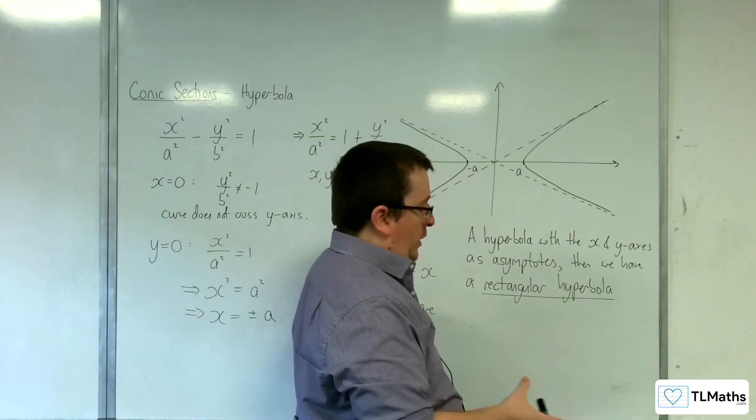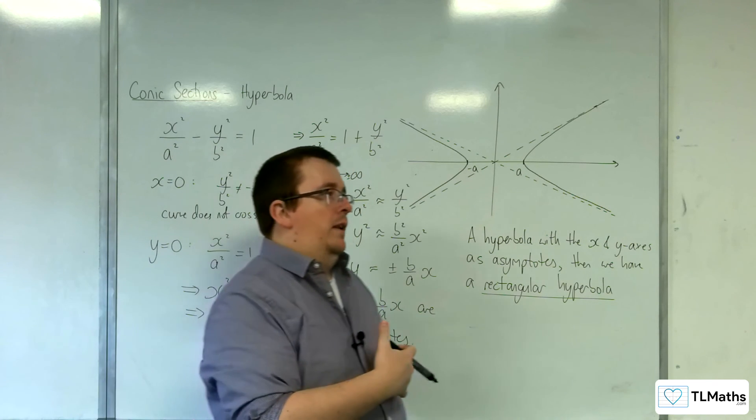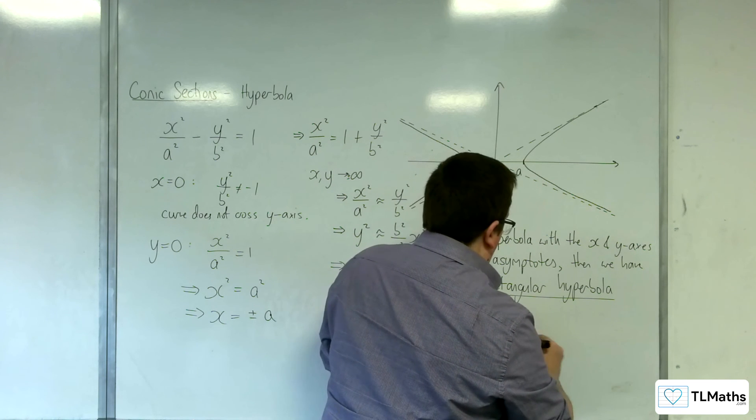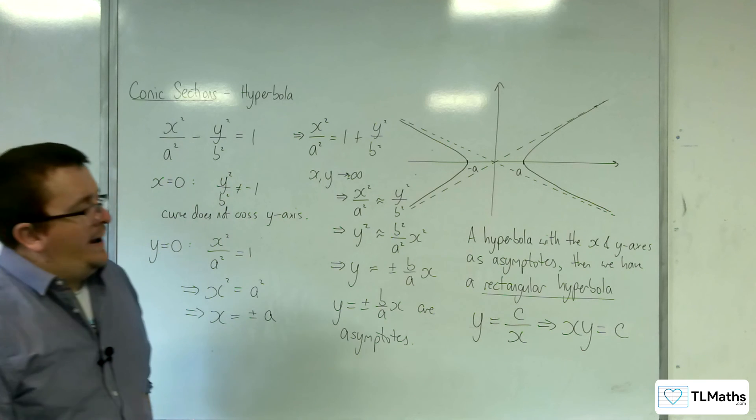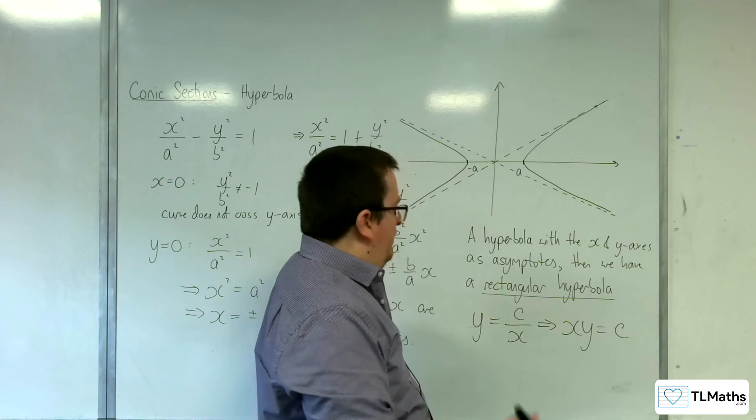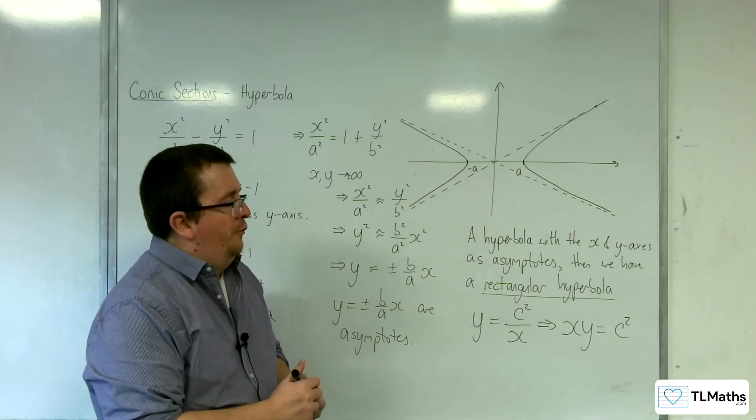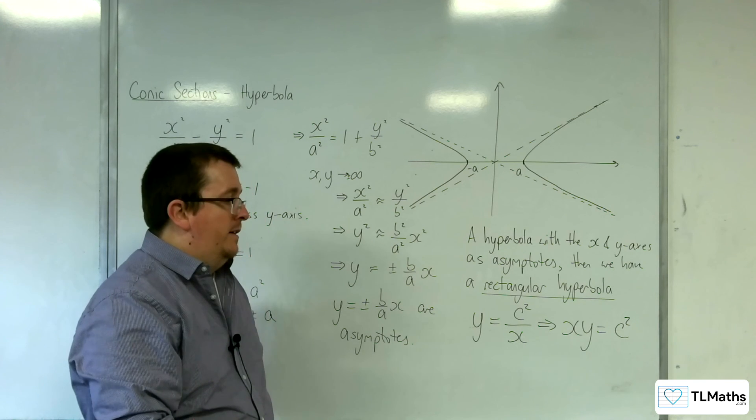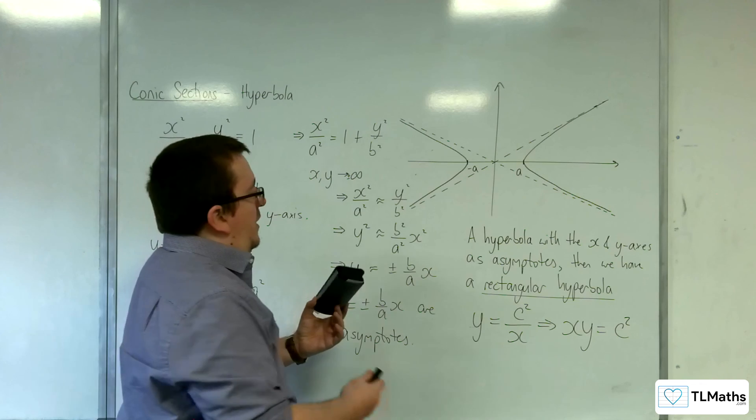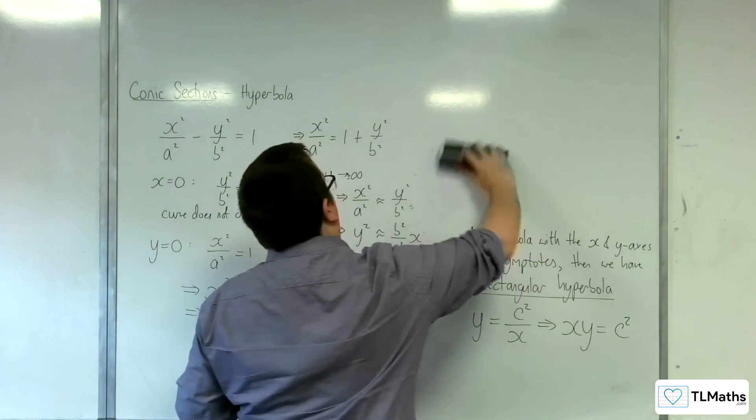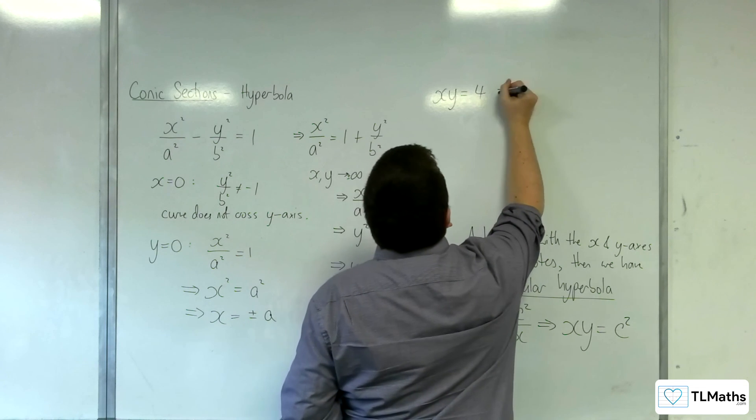So a rectangular hyperbola includes something like y equals 1 over x. In fact, y equals c over x would be its common form, which you can then multiply up by the x and write it in this alternative form here. So xy equals c, I think sometimes people write it as c squared, so xy equals c squared as a general form is the general form of a rectangular hyperbola. So it has the asymptotes of the x and y-axis.